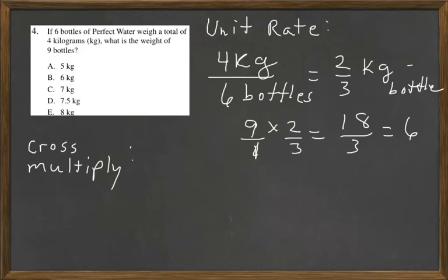And with cross-multiply, we could set it up the same way. Four over six to start off with. We know we want nine. What we don't know is x. So we go this way.